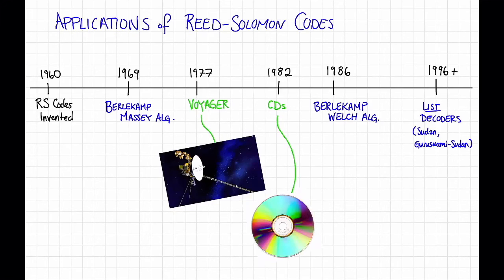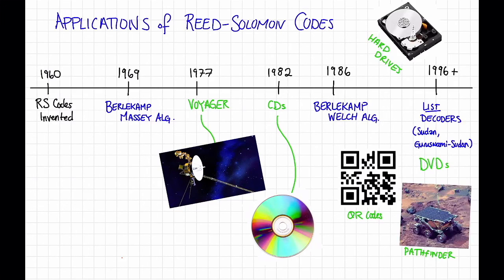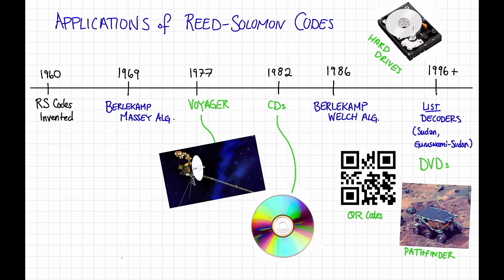How about applications of Reed-Solomon codes? Because there weren't very many good algorithms when they were first invented, they didn't have a lot of applications off the bat. However, starting in the 70s, they found many high-profile applications — for example, in the Voyager space program and in compact disks. Nowadays they're used all over the place. They aren't so popular for communication anymore, since there are other codes with faster algorithms, but they are used a lot for storage — for example, in hard drives and distributed storage systems.